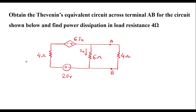In this video, I will consider one numerical on Thevenin's theorem. Obtain Thevenin's equivalent circuit across terminals A, B for the circuit shown below and find power dissipation in load resistance 4 ohm. This is the given circuit. Here, we have to find the Thevenin's equivalent across the terminals A and B.